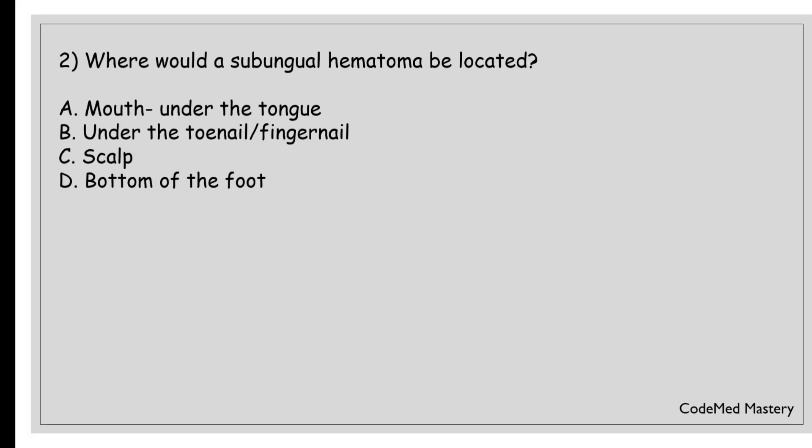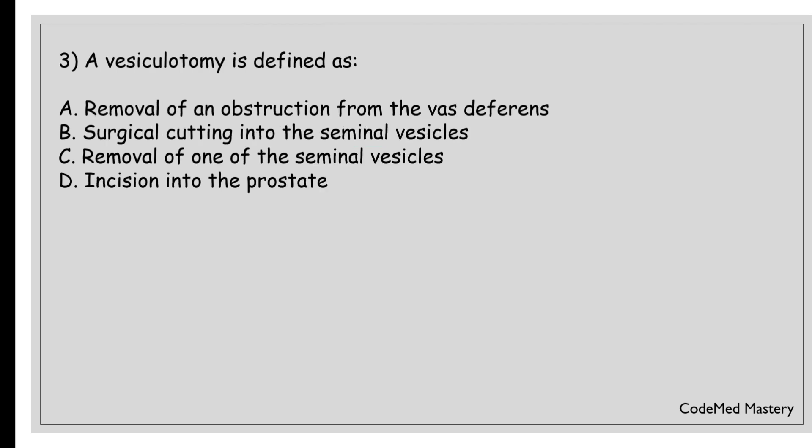Next question: where would a sub-ungual hematoma be located? Option A, mouth under the tongue; option B, under the toenail or fingernail; option C, scalp; option D, bottom of the foot. The correct answer is option B, under the toenail or fingernail. A sub-ungual hematoma refers to a collection of blood beneath the toenail or fingernail, often resulting from trauma or injury to the nail.